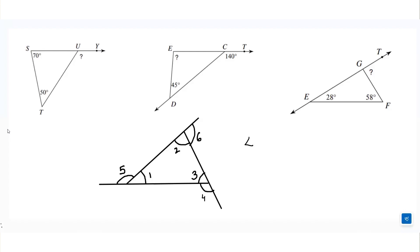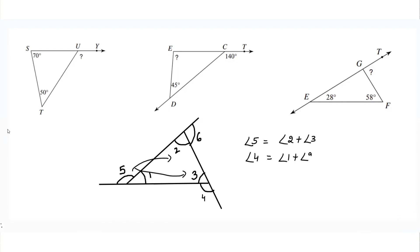In this triangle, if I have to find out what angle 5 is, it equals the sum of angle 2 and angle 3, because they are the opposite interior angles. Similarly, angle 4 equals angle 1 plus angle 2, and angle 6 equals the sum of angle 1 plus angle 3. This is how we can find out missing angles using this rule of exterior angles. Let's work on the different questions you can see on the board.